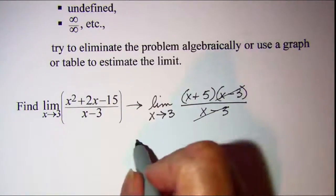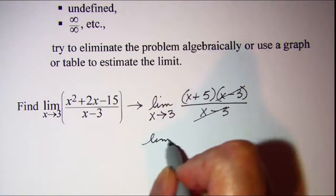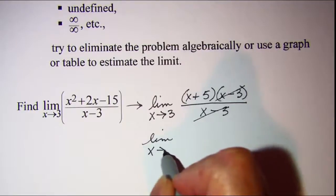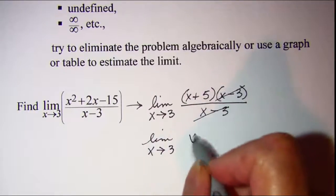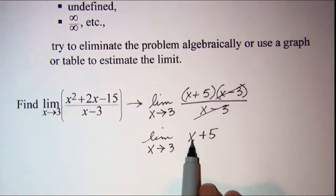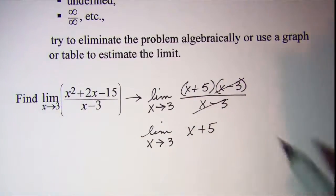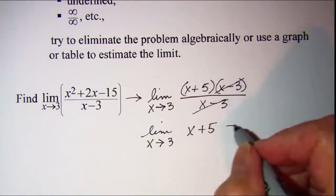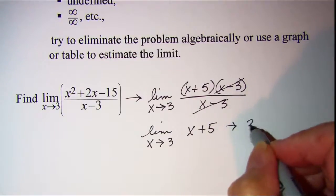So now I'm just finding the limit as x approaches 3 of x plus 5. Well, direct substitution is fine on this one. When we put 3 in for x, we get 3 plus 5, which is 8.